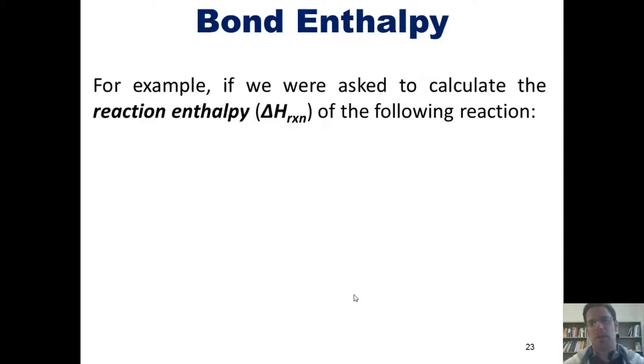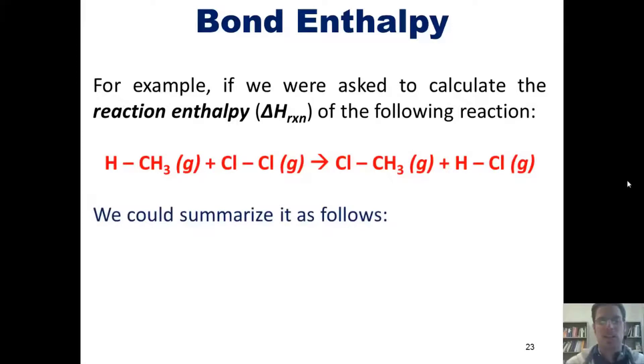For example, if we were asked to calculate the reaction enthalpy, which is often abbreviated as delta H sub Rxn for reaction, of the transformation shown here, we could summarize it as follows. In this transformation going from left to right, you'll notice that this hydrogen bonded to this carbon is ultimately being replaced with a chlorine bonded to the carbon, and this chlorine bonded to this chlorine is being replaced by a hydrogen bonded to a chlorine.